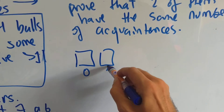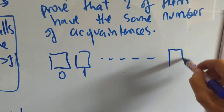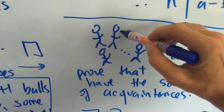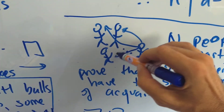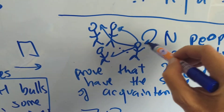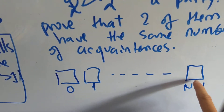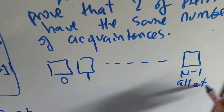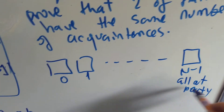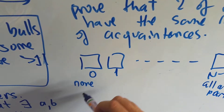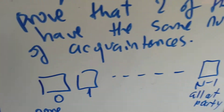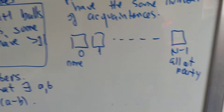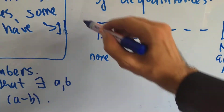Let our boxes represent the number of acquaintances. You can have anything from 0 all the way up to n minus 1. Why n minus 1? Because this person can know the other people, but you're not an acquaintance of yourself, so we don't count that. The largest possible number of acquaintances anyone can have is n minus 1 — knowing everyone at the party.